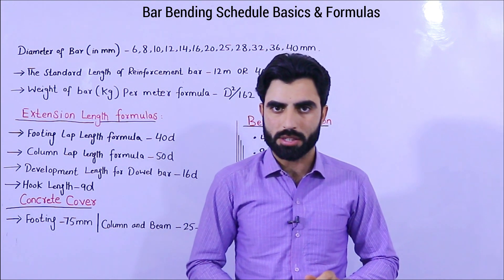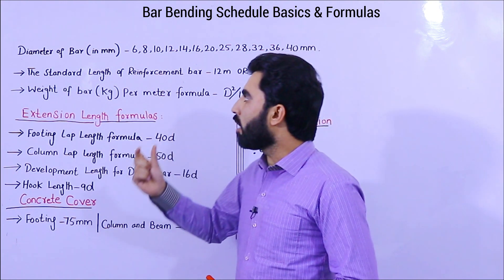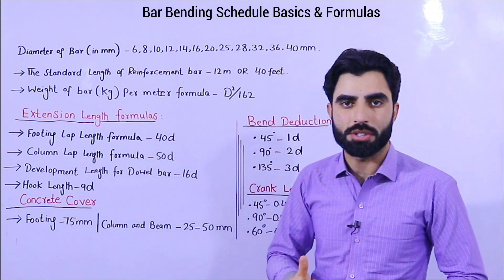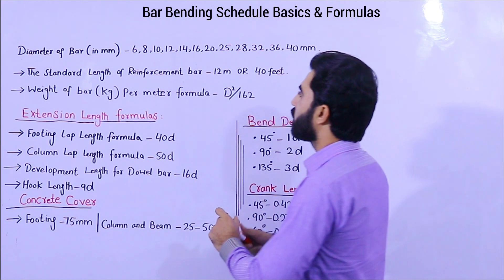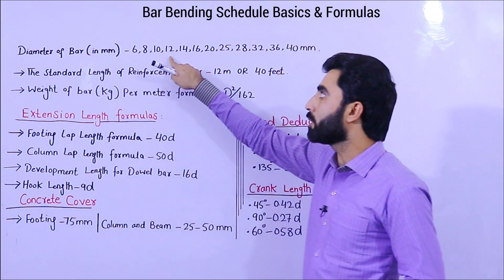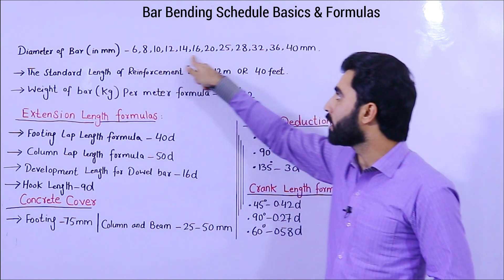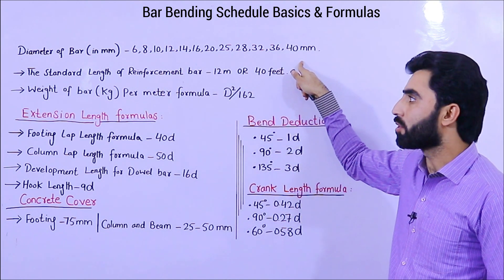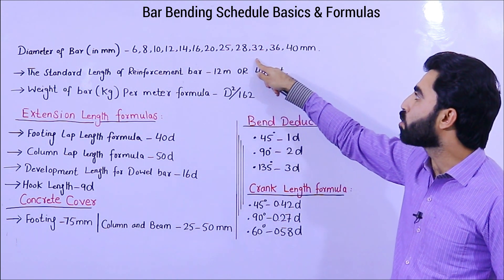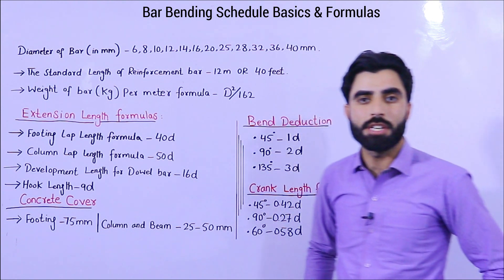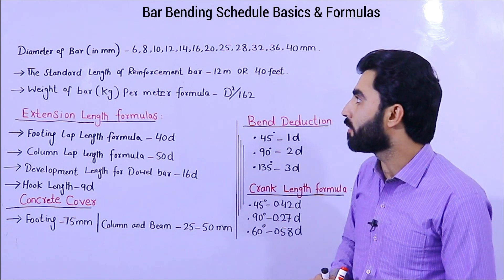First of all, I will guide you on diameters of bars in millimeters. We have different steel diameters: 6mm, 8mm, 10mm — we don't have 11mm or 13mm. The available standard diameters are 6, 8, 10, 12, 14, 16, 20, 25, 28, 32, 36, and 40 millimeter steel rods used in construction of buildings.